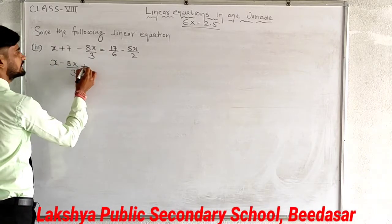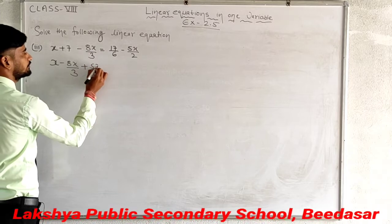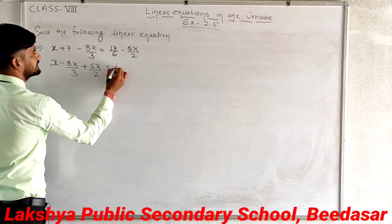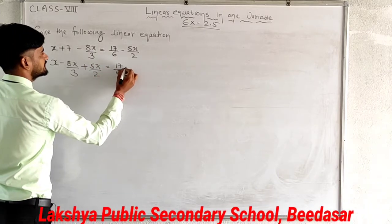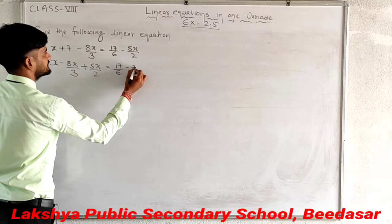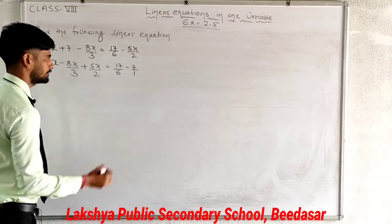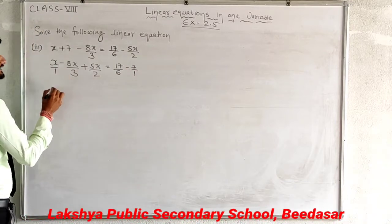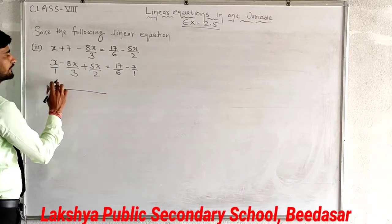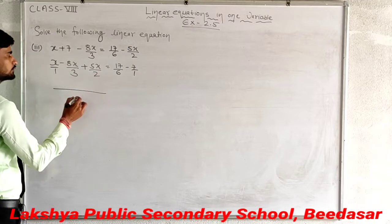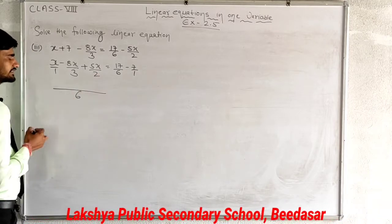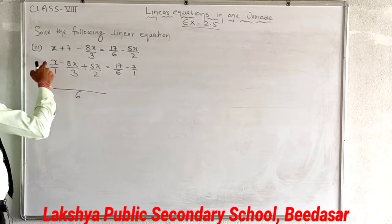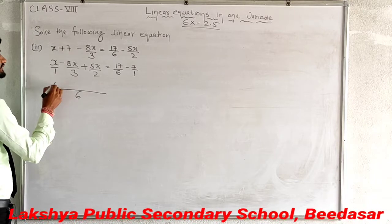Since the term was negative, after transposing it becomes positive. On the right we have 17 upon 6 minus 7 upon 1. Now take the LCM of 1, 3, and 2, which is 6. Divide 6 by 1 giving 6 times x: 6x.